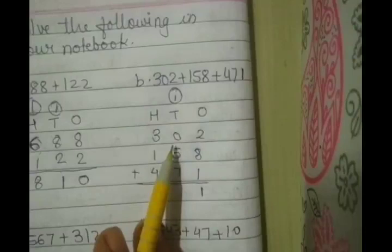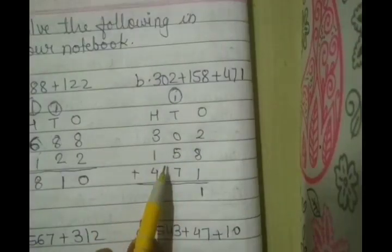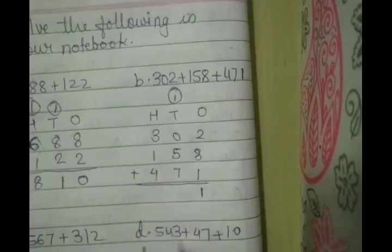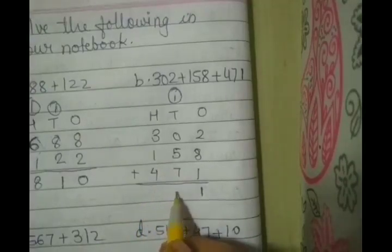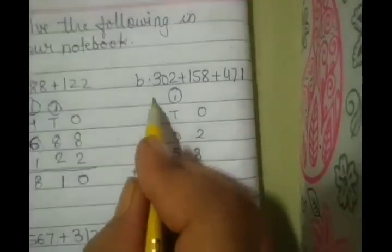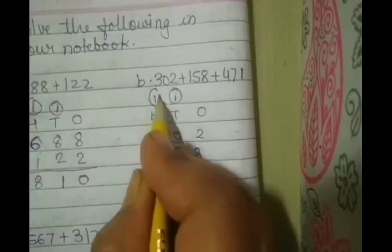1 plus 0, 1 plus 5, 6 plus 7, 13. Write down 3 in the tens column. Carry forward 1 in hundreds column.